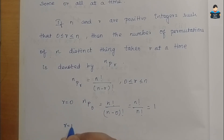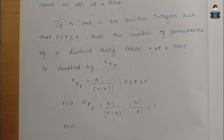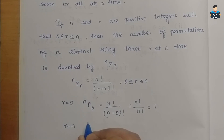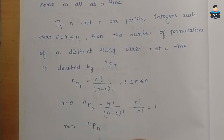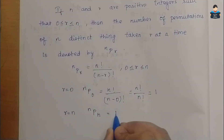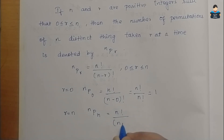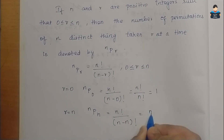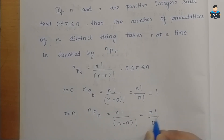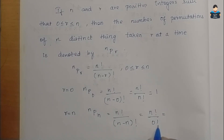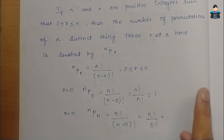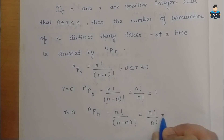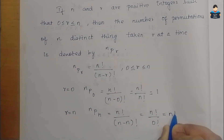When r equals n, what is nPn? That is n factorial by (n minus n) factorial, which is n factorial by 0 factorial. Since 0 factorial is 1, nPn equals n factorial.